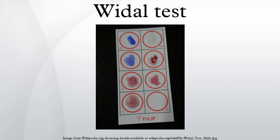Other means of diagnosing Salmonella typhi include cultures of blood, urine, and feces. These organisms produce H2S from thiosulfate and can be easily identified on differential media such as bismuth sulfate agar.